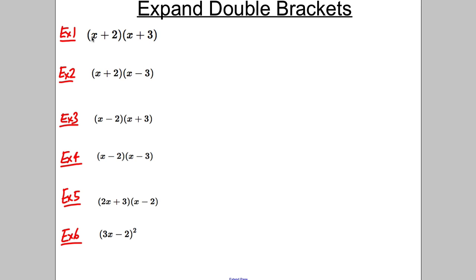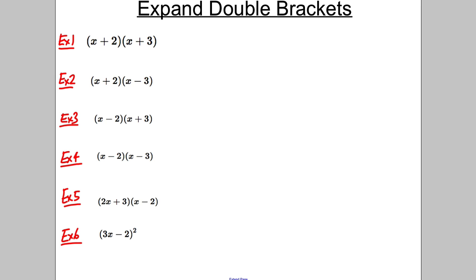We're expanding double brackets and we're going to do six examples — copy these down on a revision card. We take x and multiply it by both terms in the second bracket: x multiplied by x gives x squared, and x multiplied by positive 3 gives positive 3x. Then we take the second term in the first bracket, positive 2, and multiply it by both terms in the second bracket.